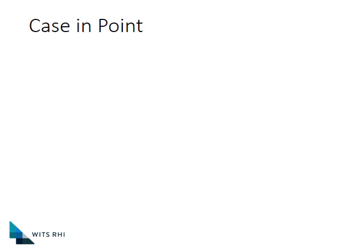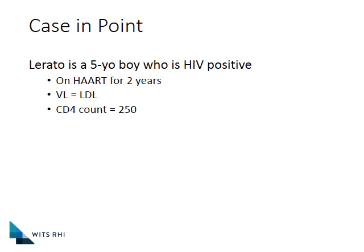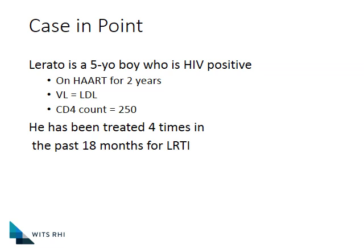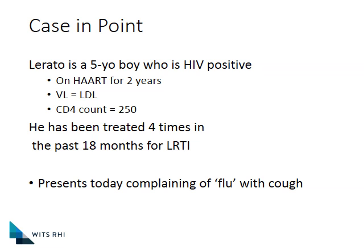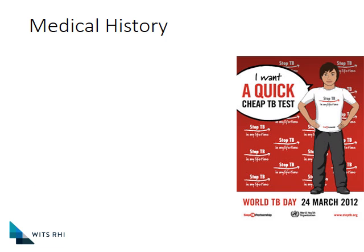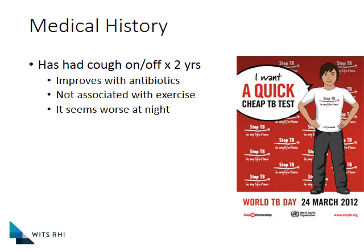Let's look at the kind of children that might present in our practices. Lerato is a five-year-old boy who's HIV positive. He's been on ART for a couple of years with a nicely suppressed viral load, and his CD4 count is 250. Looking back, you notice that he's been treated four times in the last 18 months for lower respiratory tract infection, all on a primary healthcare basis. Now today he's back again, complaining of a flu with a cough, which he's had on and off for two years.